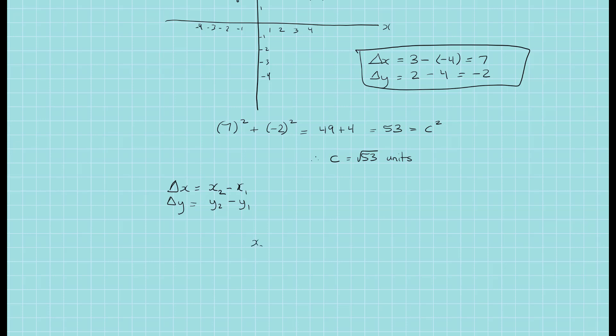We just have x2 minus x1 squared plus y2 minus y1 squared is equal to C squared, where C is the distance of the straight line connecting A and B, and therefore C is the square root of all of that.